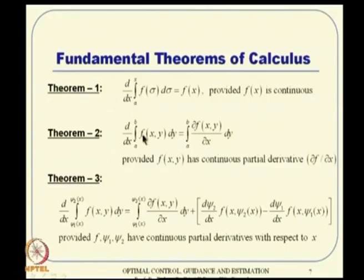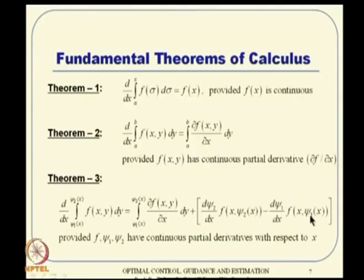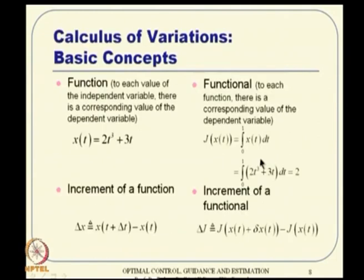What happens when the limits are constant but inside the integral you have a function of the dependent variable? It is integrated over y, but the result is a function of x. The derivative can be evaluated, provided f(x,y) has a continuous partial derivative ∂f/∂x. If in addition the limits are also functions of the free variable (ψ₁ and ψ₂ instead of constants), additional components appear. Some of these results will be used in calculus of variation analysis, giving transversality conditions.